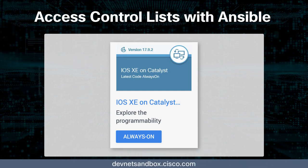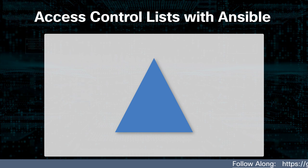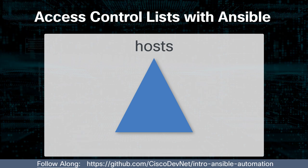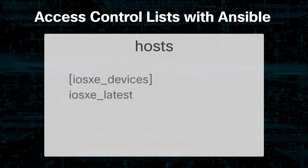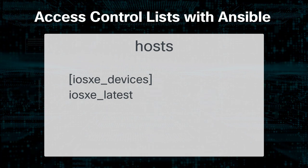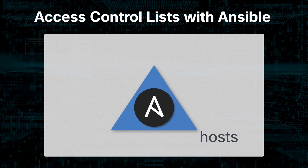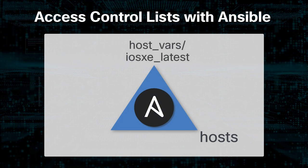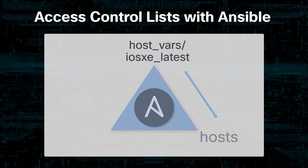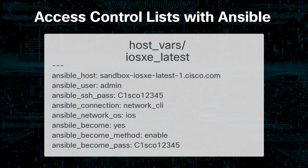There are three files we will be working with from our local environment. The first is the host file, which is an inventory file containing information about the managed devices. For our purposes, we create the host file in the root directory specifying one group called ios-xe-devices and adding one device: ios-xe-latest. Second, we create a directory called host_vars and in it a file called ios-xe-latest, which holds all the connectivity data for that device. When we run our playbook, it will look to the host file, which will in turn look to this file for connectivity details.